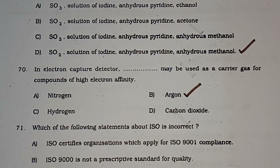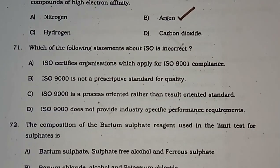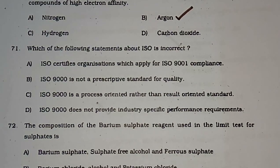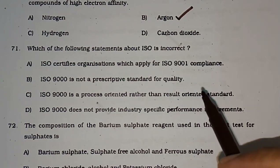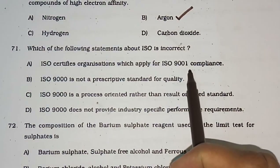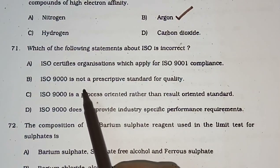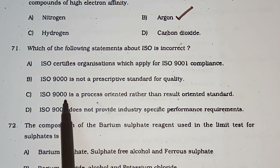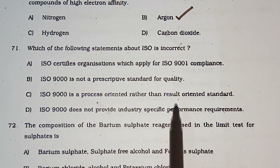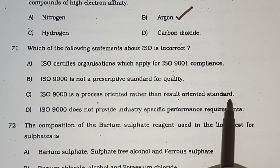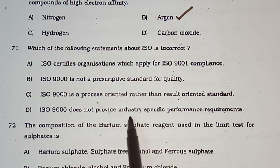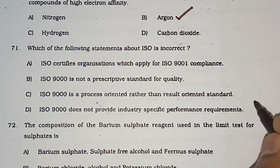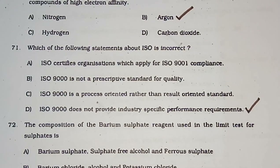Question number 71: Which of the following statements about ISO is incorrect? Options: (A) ISO certifies organizations which apply for ISO 9001 compliance, (B) ISO 9001 is not a prescriptive standard for quality, (C) ISO 9001 is a process-oriented rather than result-oriented standard, (D) ISO 9000 does not provide industry-specific performance requirements. The correct answer is option D.